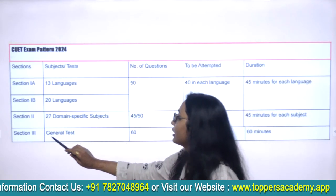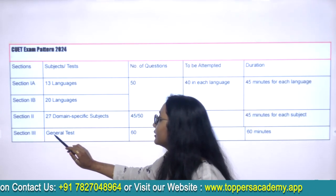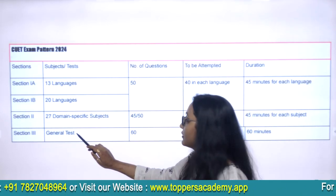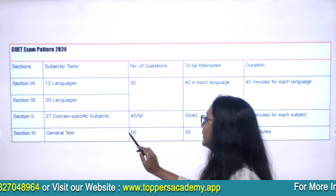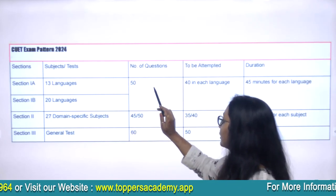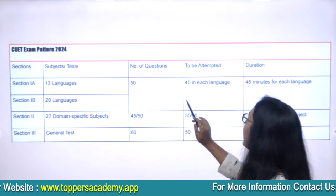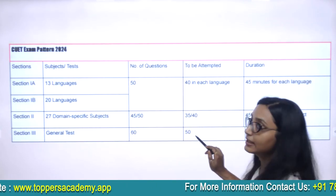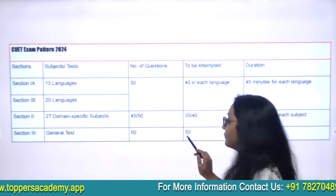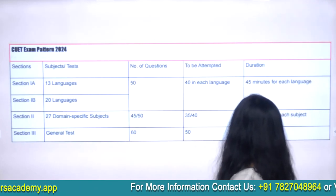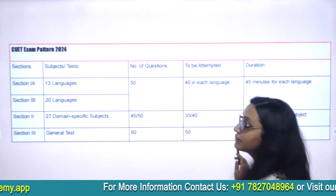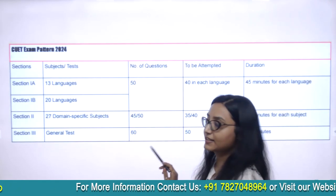Coming to section three, which includes the general test. In the general test, the total number of questions is 60, and the student has to obtain a minimum of 50. Students will be given 60 minutes for this section.